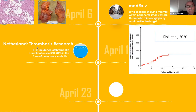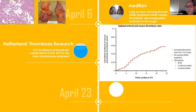On April 13th, a large study from the Netherlands published in Thrombosis Research by Klok et al. showed that 31% of patients would develop thrombotic complications in the ICU. 81% of these thrombotic complications were in the form of pulmonary embolism. They followed those patients up to 22 days, with a total of 184 patients — 65 PEs, five ischemic strokes, and two arterial emboli. The rate of thromboembolic complications reached up to 60%.